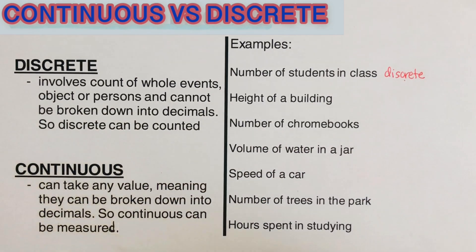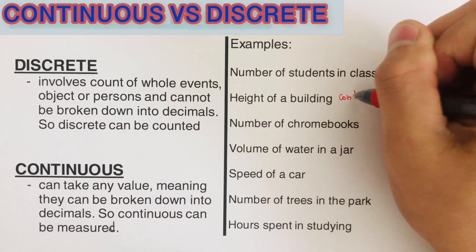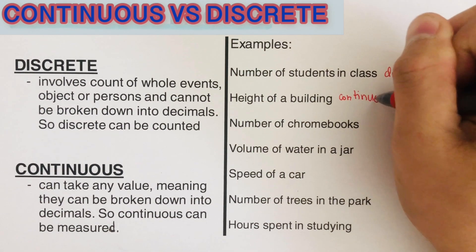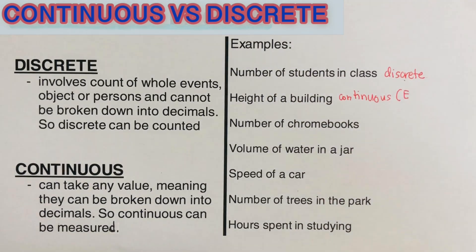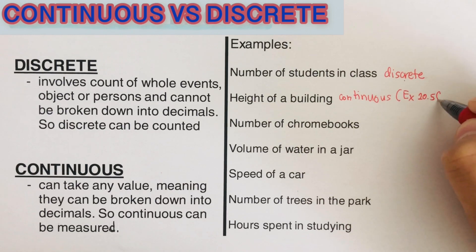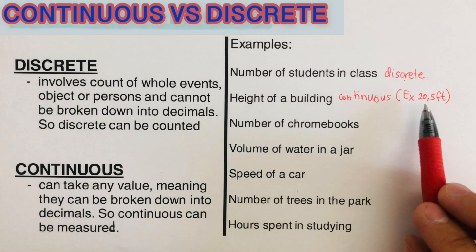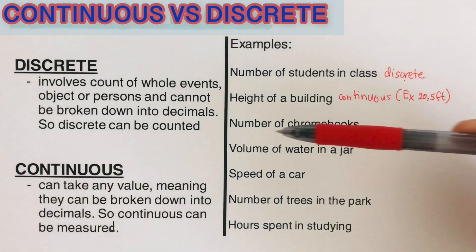The next example is the height of a building, which is an example of continuous. A building can be, say, 20.5 feet tall, so it can be in decimal form — it doesn't have to be a whole number. So this is an example of continuous.